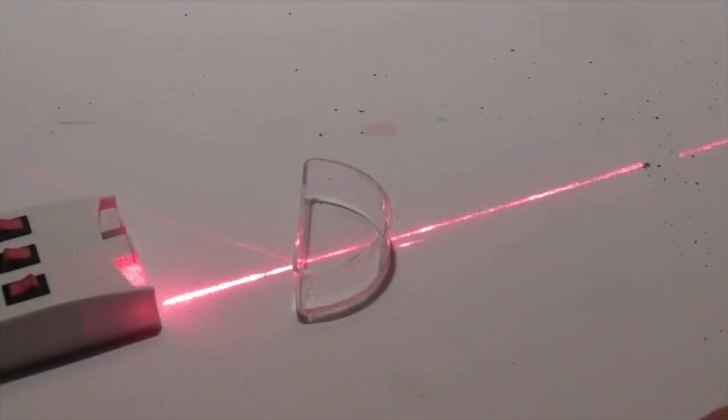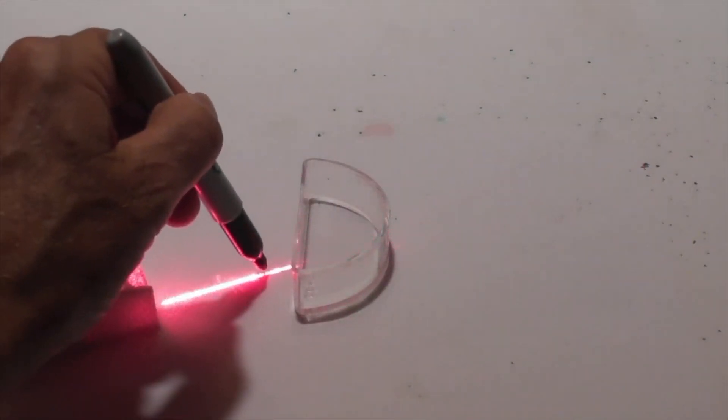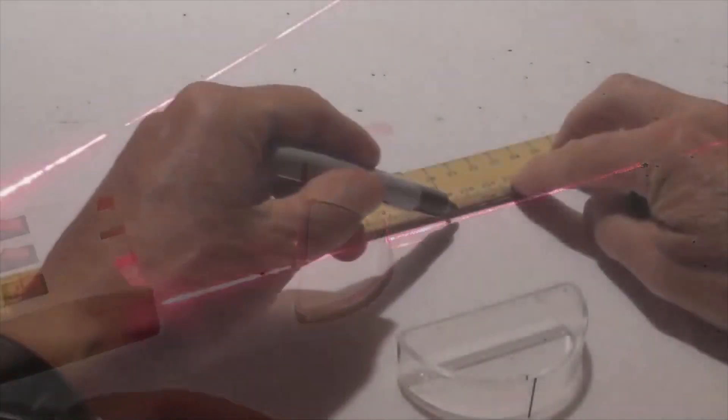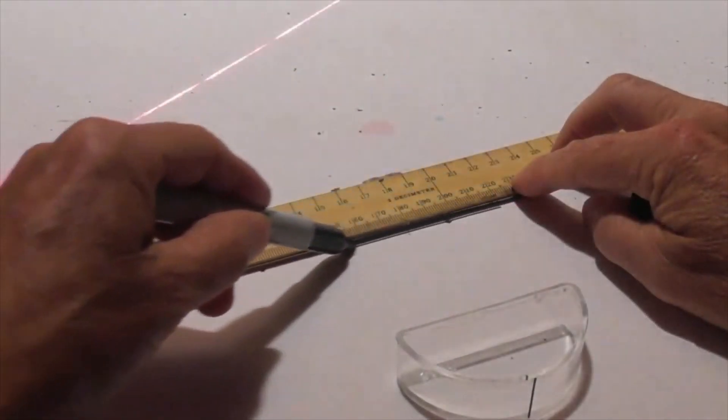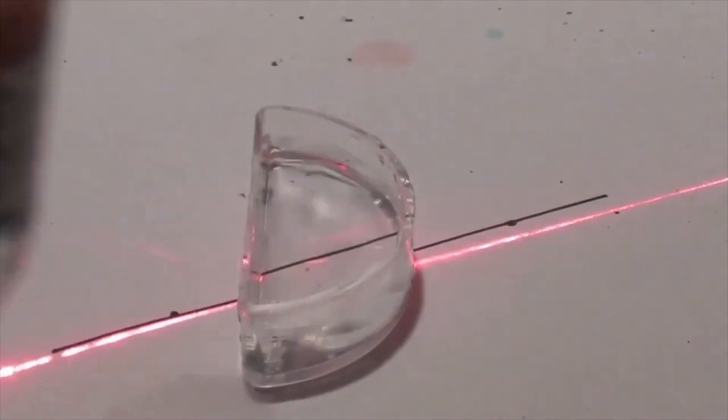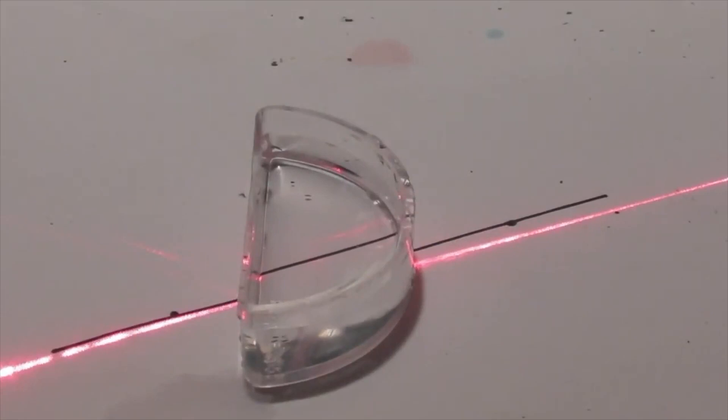Next, I have liquid. First, I shine the light without the water inside. I mark it with my ruler. And now, when I add water, notice how the light bends. It slows down and bends.